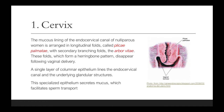The mucosal lining of the endocervical canal of a nulliparous woman is arranged in longitudinal folds called the plicae palmitatae, with secondary branching folds called the arborvitae. These folds, which form a herringbone pattern, disappear following vaginal delivery. A single layer of columnar epithelium lines the endocervical canal and the underlying glandular structures. This specialized epithelium secretes mucus, and this mucus facilitates sperm transport.